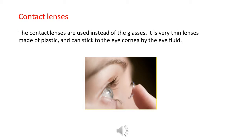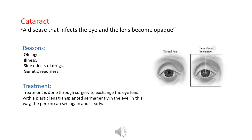Contact lenses are used instead of glasses. They are very thin lenses made of plastic that can stick to the eye cornea using eye fluid. Cataract is a disease that infects the eye causing the lens to become opaque. Reasons for cataract include old age, illness, side effects of drugs, and genetic predisposition. Treatment is done through surgery to exchange the eye lens with a plastic lens transplanted permanently.